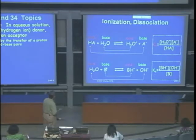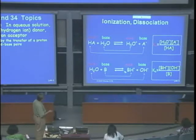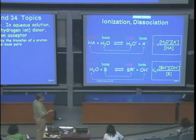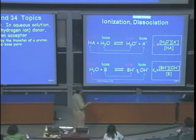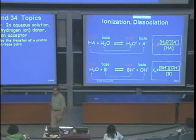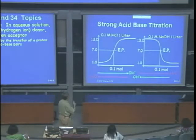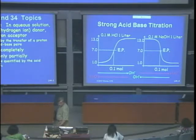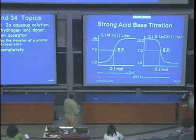The same is true for a base: a base takes protons from an acid. Water can act as an acid, donating a proton to the base. The base becomes its conjugate acid BH+. Water, having lost one H, becomes OH⁻, the conjugate base. The base constant Kb is the concentration of BH+ times OH⁻ divided by the concentration of B. For a strong base, that constant is very large.